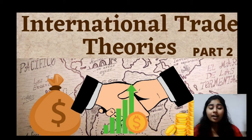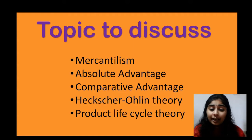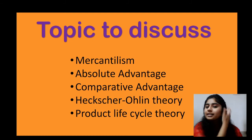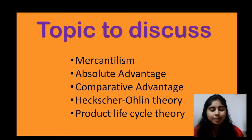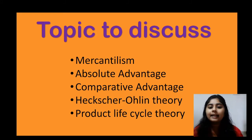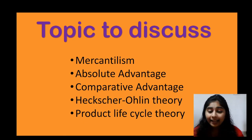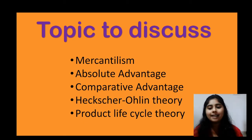Today we are continuing with international trade theories, part 2. In the last video we discussed Mercantilism theory and absolute advantage theory — the link is in the description box. Today we are going to discuss three important theories: comparative advantage theory, Heckscher-Ohlin theory, and product life cycle theory.